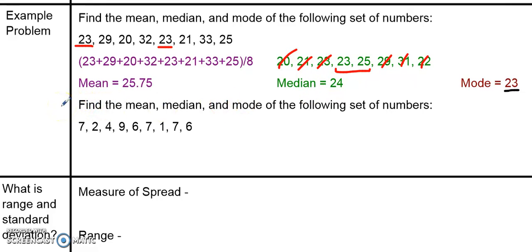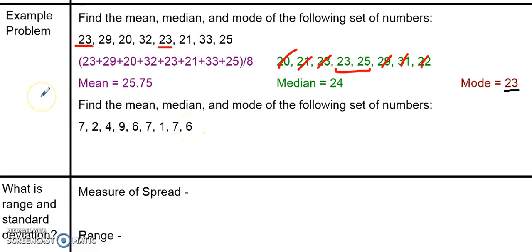I've got one more example here. Find the mean, median, and mode of: 7, 2, 4, 9, 6, 7, 1, 7, and 6. I'm not going to do this one for you right now. Instead, I want you to try this one on your own, and we'll talk about it when you come into class next time. Give this one a try before moving on.